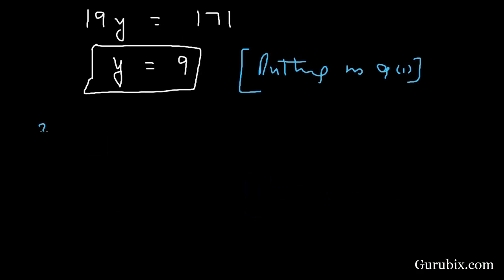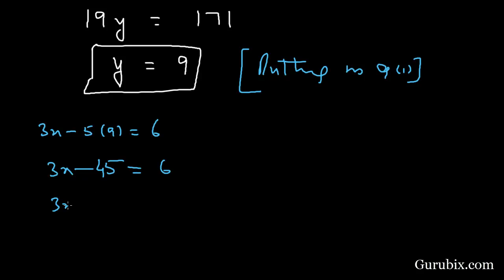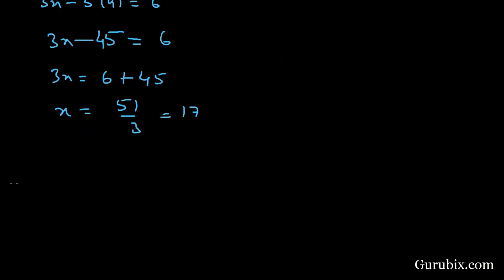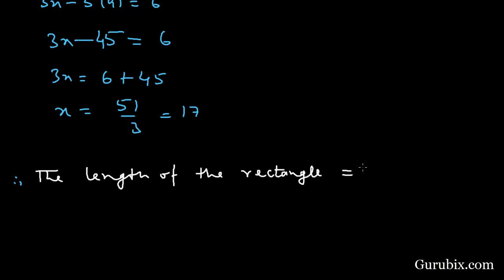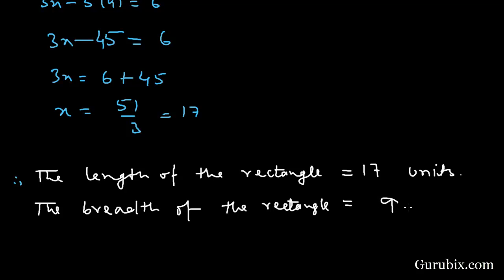Substituting y = 9 into equation number 1: 3x − 5(9) = 6, so 3x − 45 = 6, giving 3x = 51, therefore x = 17. The length of the rectangle is 17 units and the breadth of the rectangle is 9 units. This is the solution of the question. Thank you.